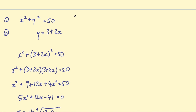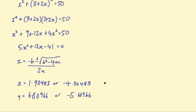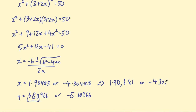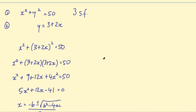Usually these questions say round to three significant figures, so the solutions become x equals 1.90 and y equals 6.81 for the first pair, or x equals minus 4.30 and y equals minus 5.61 for the second pair.